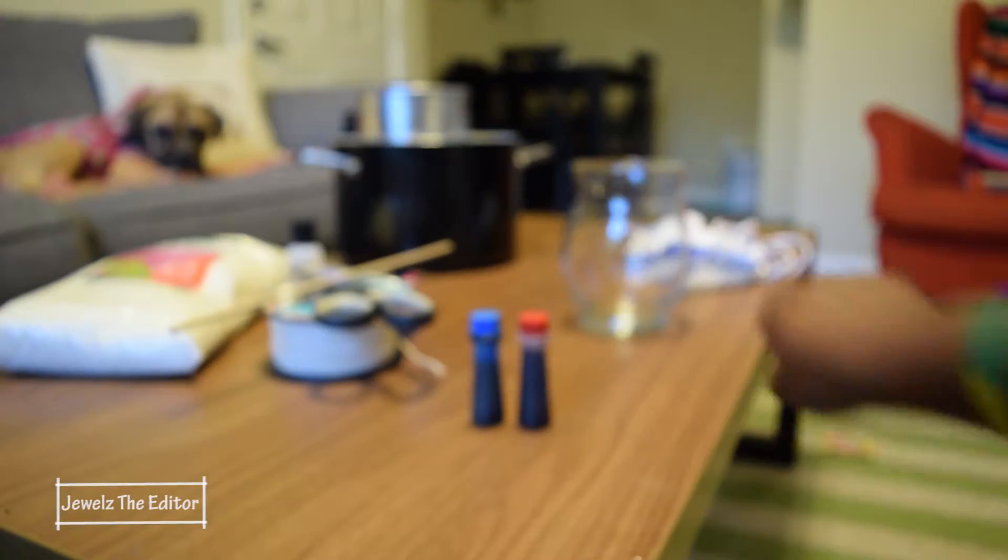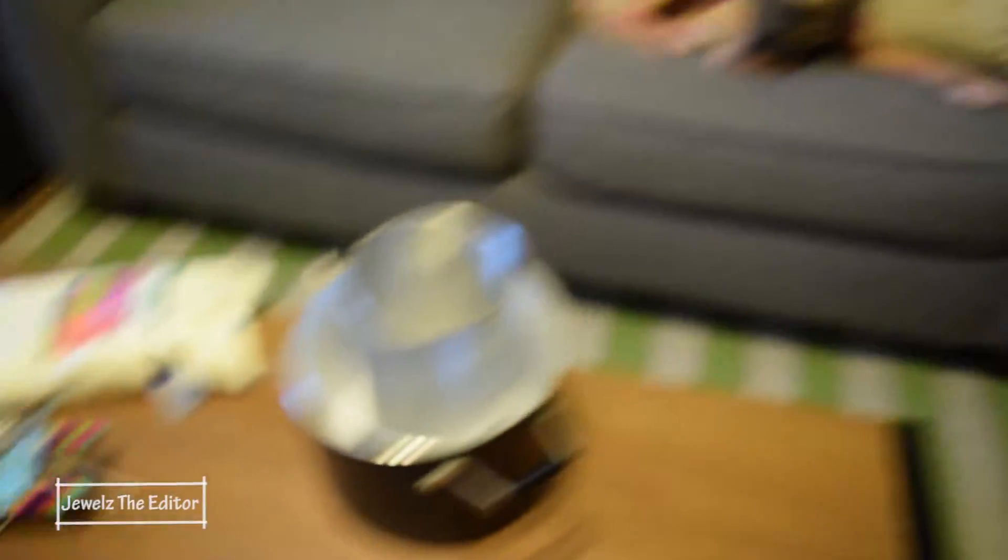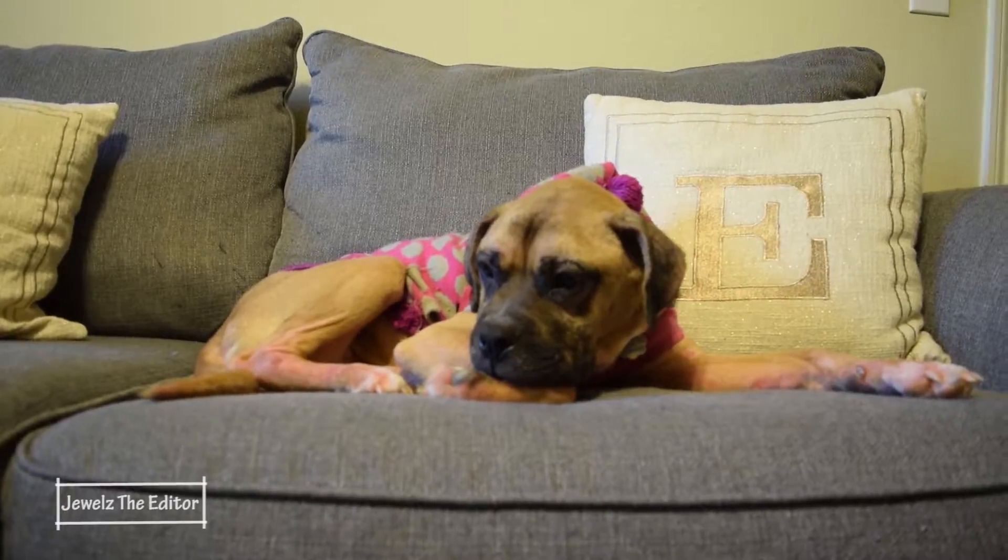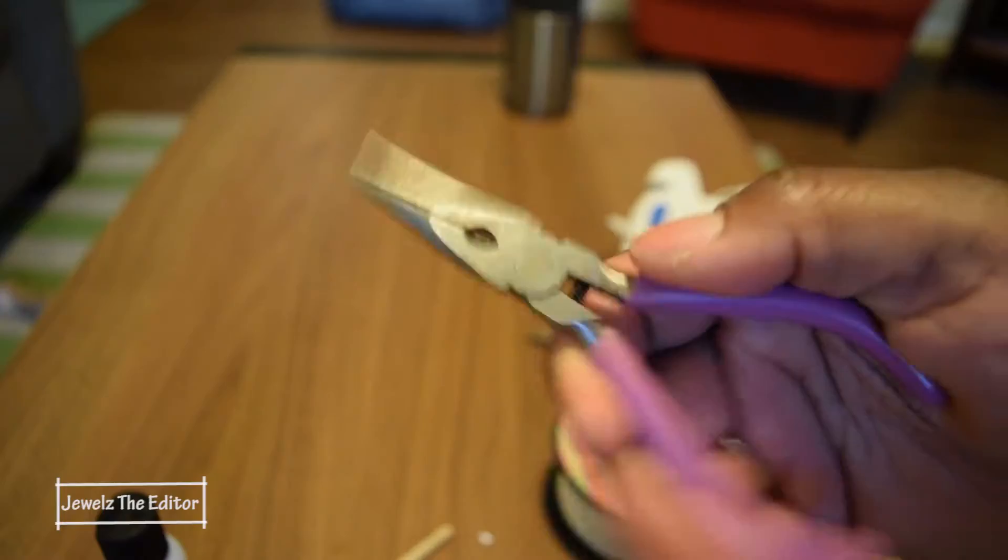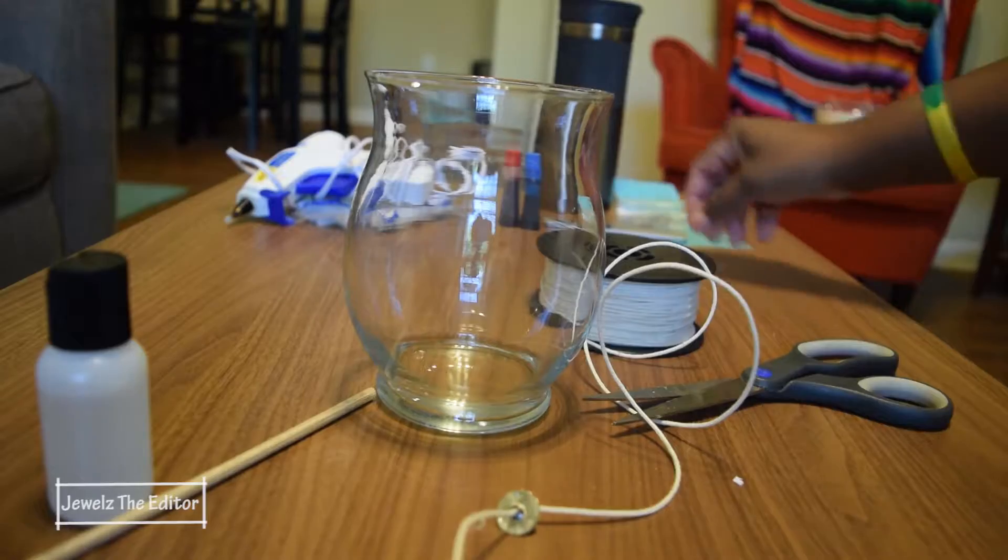Get two pots, one should fit in the other one. You'll need wax, a scent, hot glue, wick, an anchor, scissors, stick, food coloring is optional and a container.